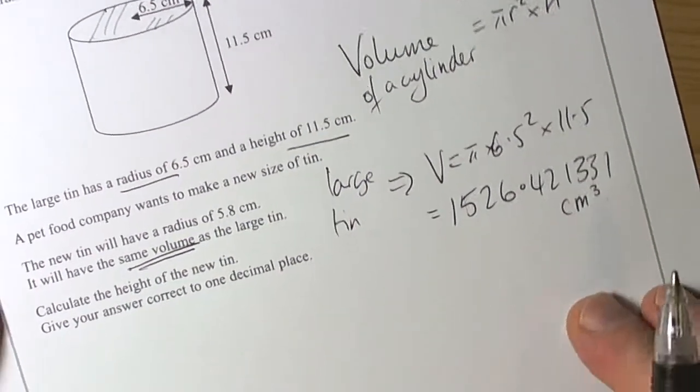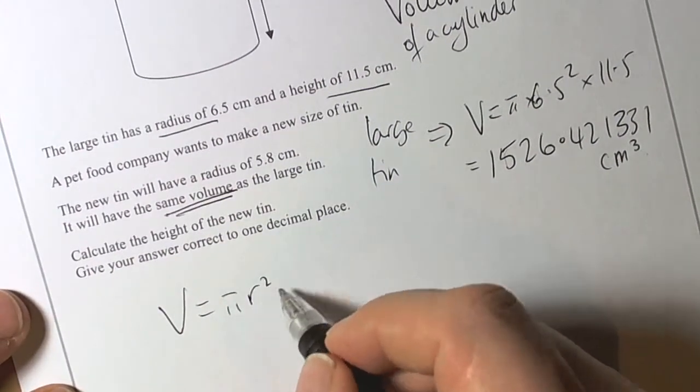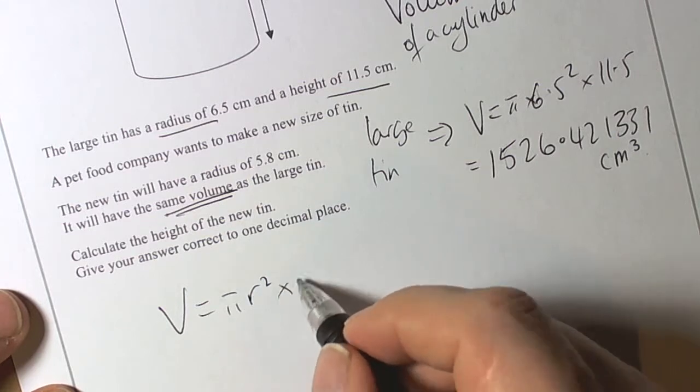So the formula of the new tin is still going to be the same idea. The volume is the area of the circle times the height of it.